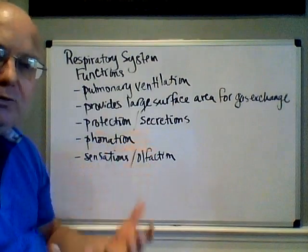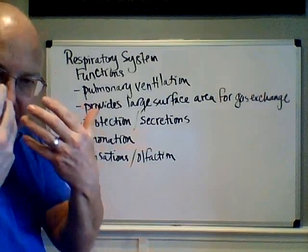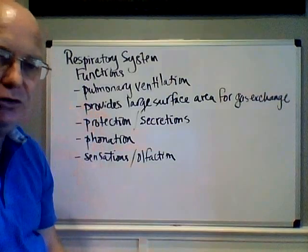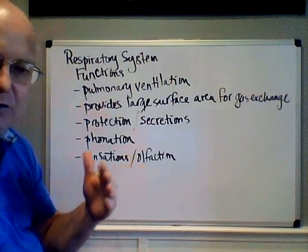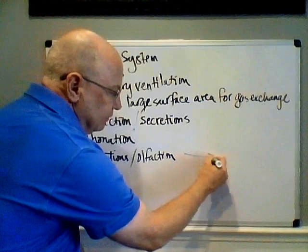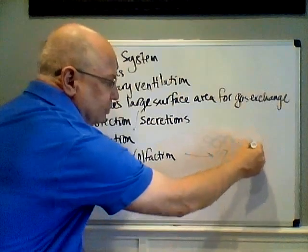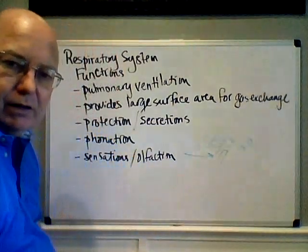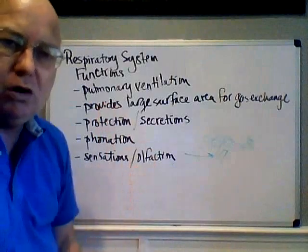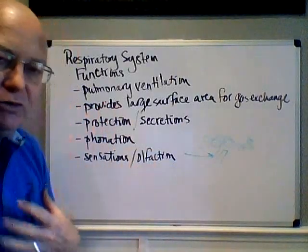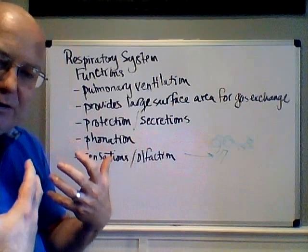The third function is protection. In order to protect itself, the respiratory system does a number of things. One of them is secretions — we secrete mucus. We have the nasal conchae and the nasal cavities that create turbulence, which is a change in the direction of air flow. As air swirls around, it comes in contact with the walls of the nasal cavity and the respiratory passageway — the respiratory tree — which are coated with mucus. That mucus can stick to and bind up a lot of particulate matter.